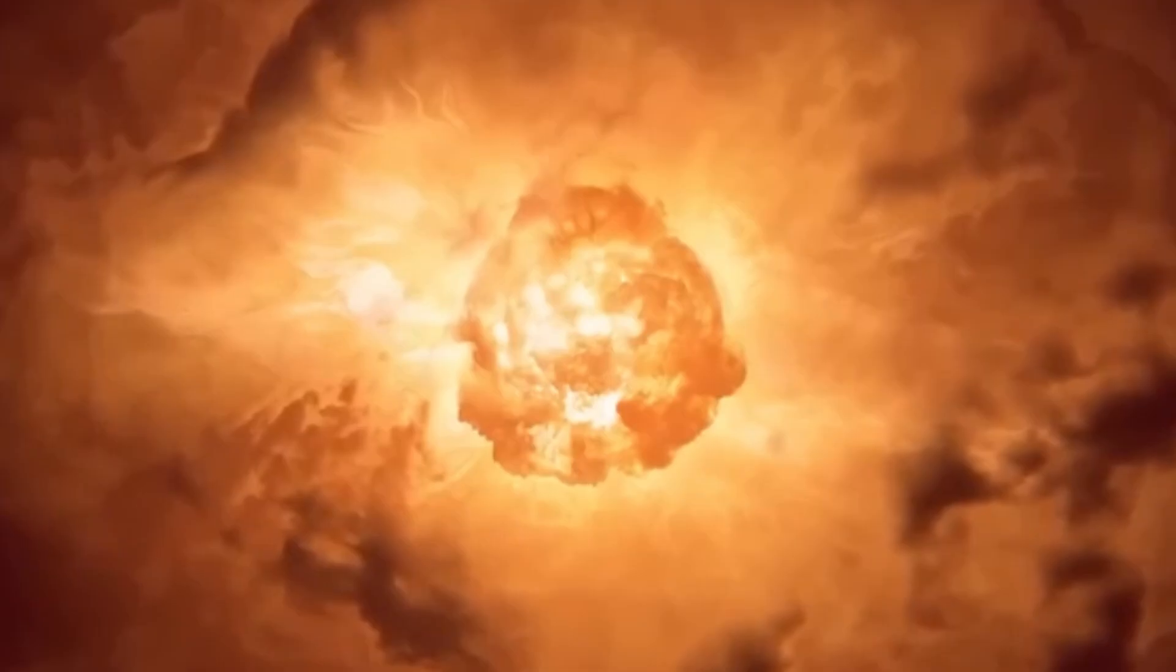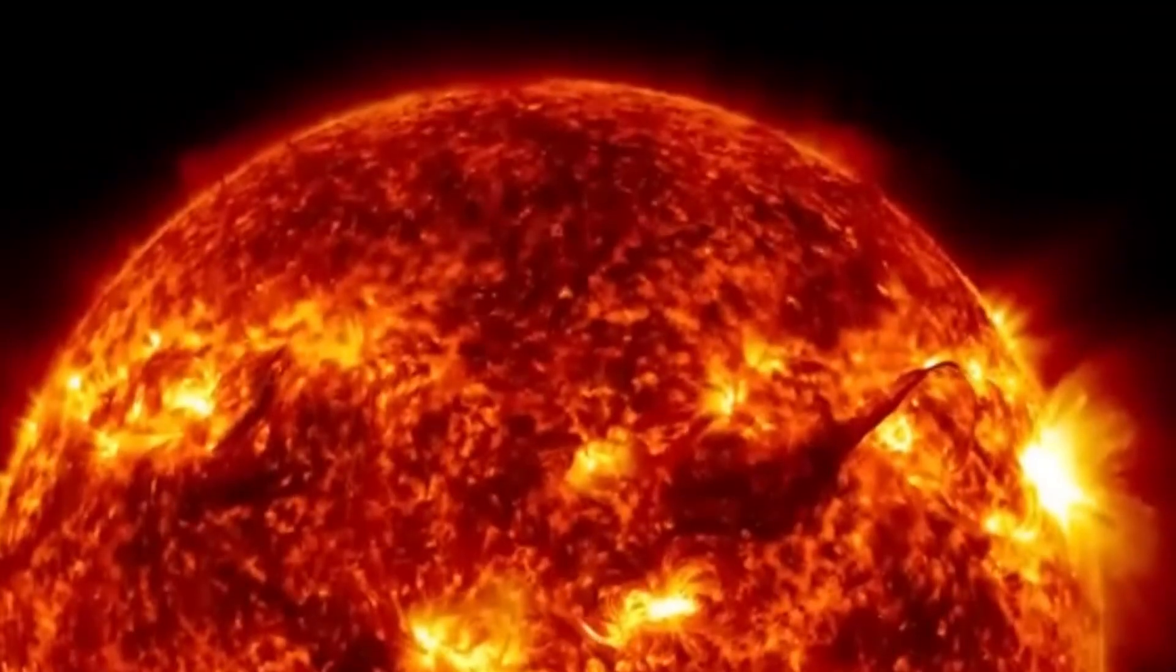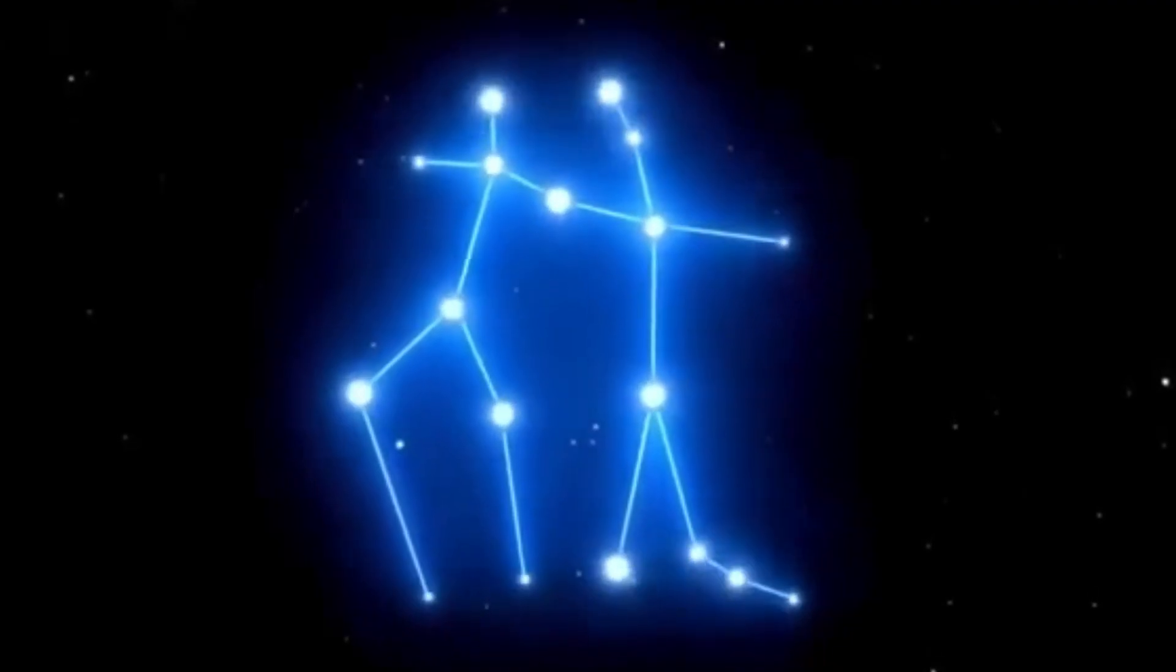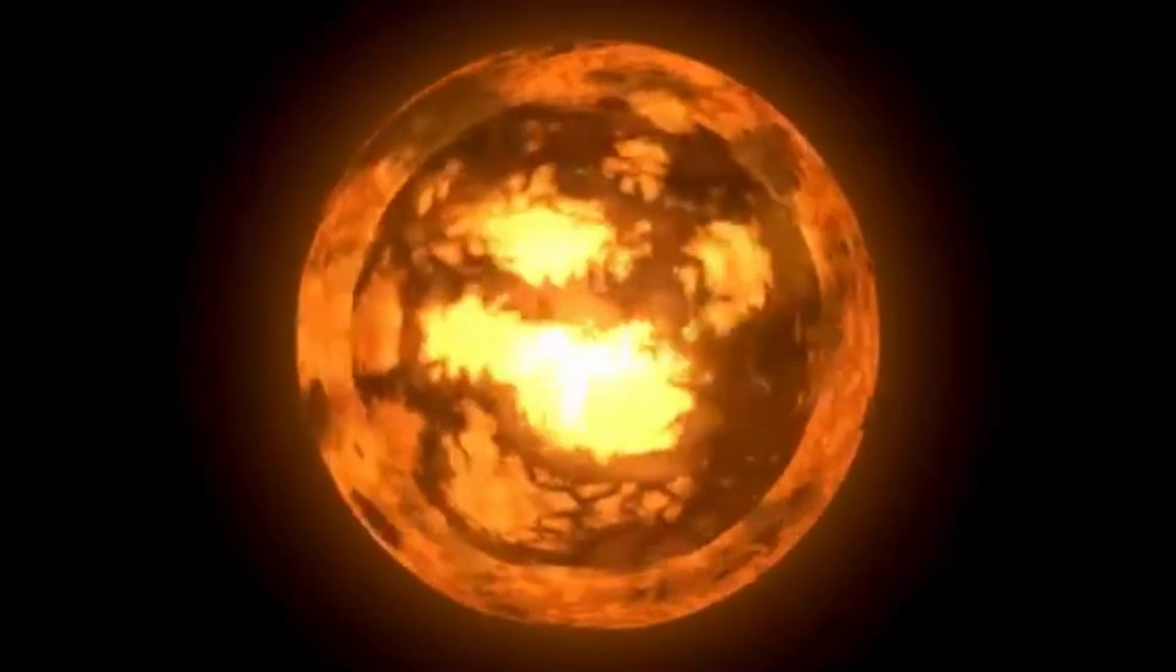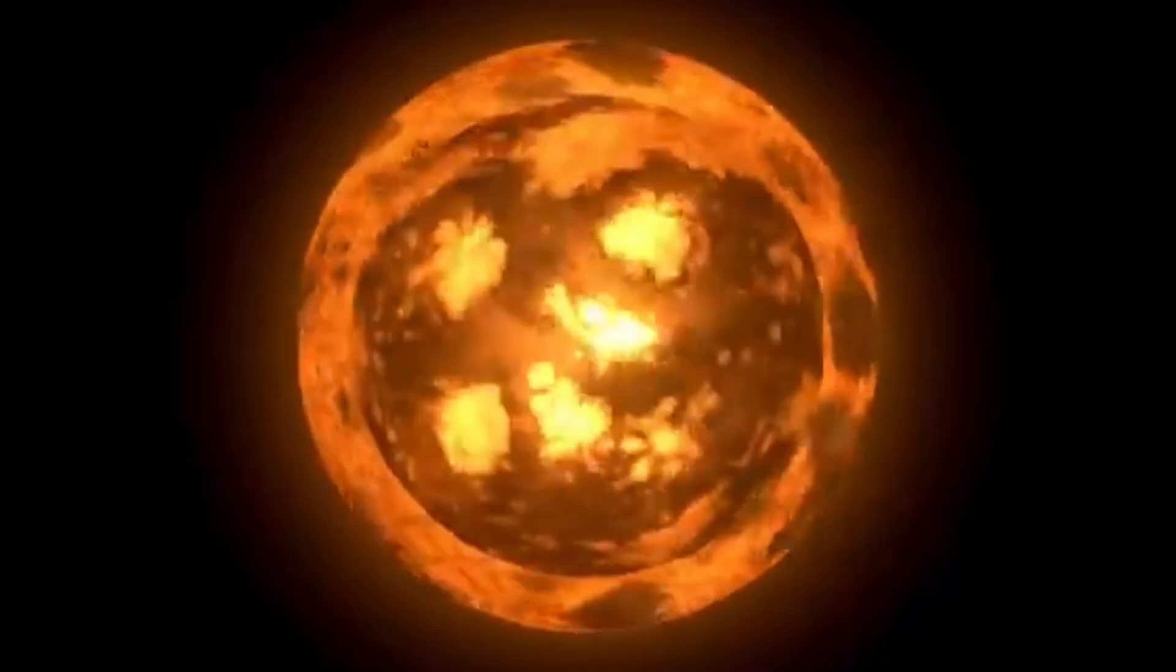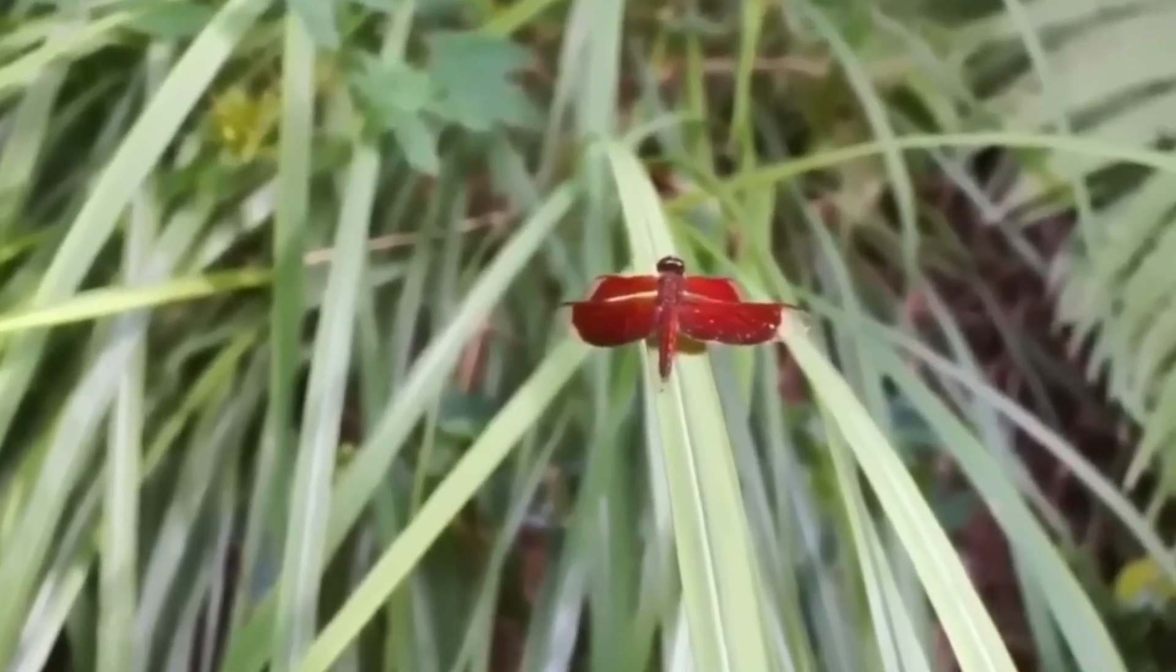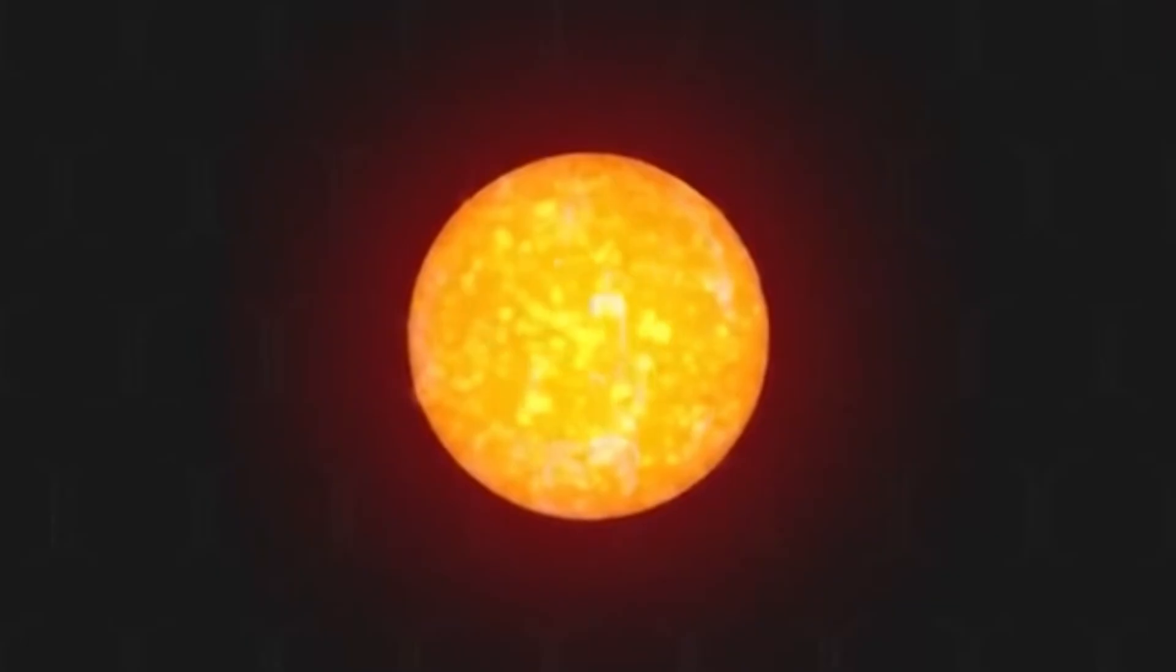In 2019 and 2020, Betelgeuse dimmed so dramatically that it became big news around the world. For a while, it became the faintest that astronomers had ever seen it. People started wondering if this was finally it, if we were about to witness the supernova that everyone had been waiting for. But then the star brightened up again, returning to its normal brightness. It turned out that what we were seeing was probably a massive cloud of dust that the star had ejected, which temporarily blocked some of its light from reaching us.